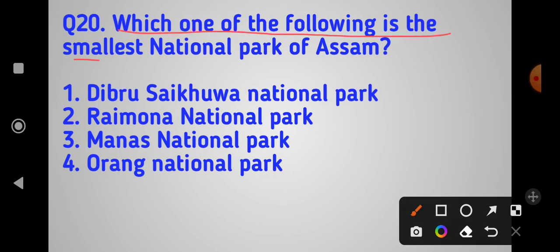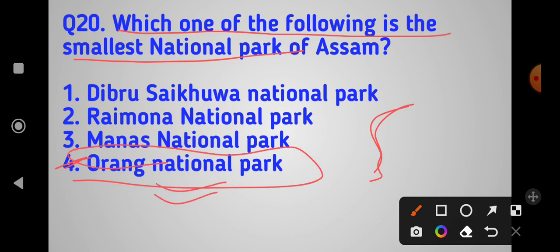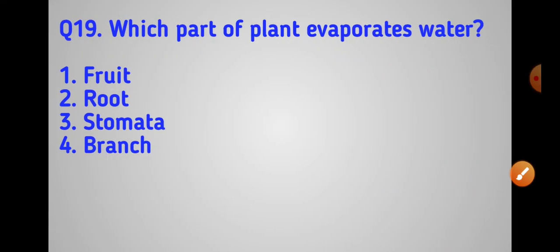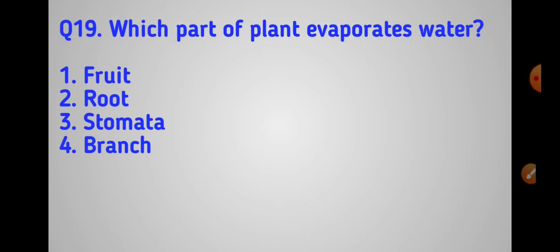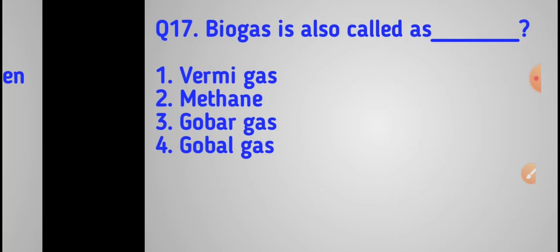Which one of the following is the smallest national park? The answer is the first option - it's the smallest national park in terms of area.